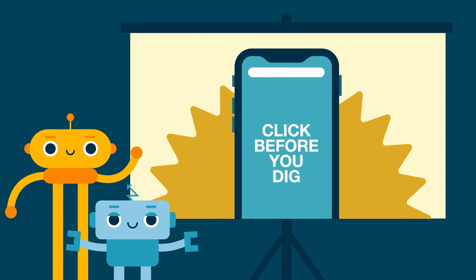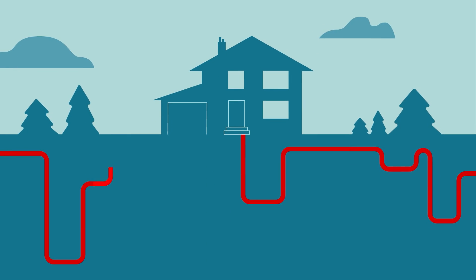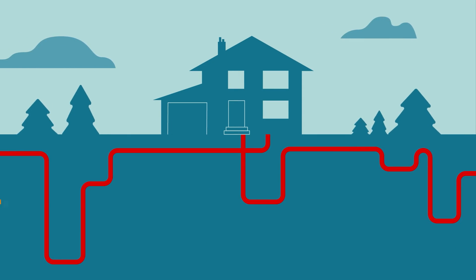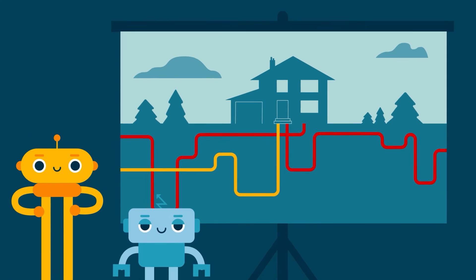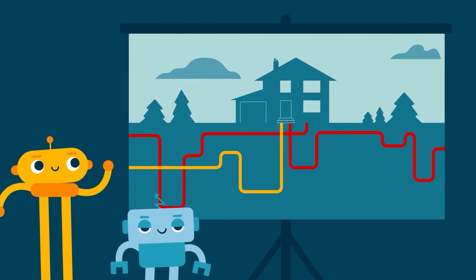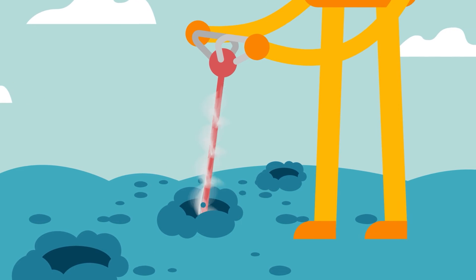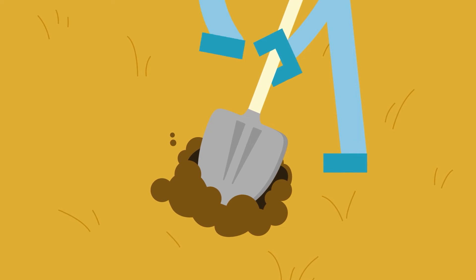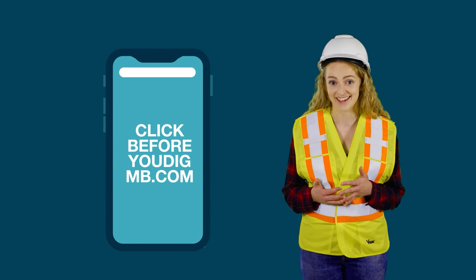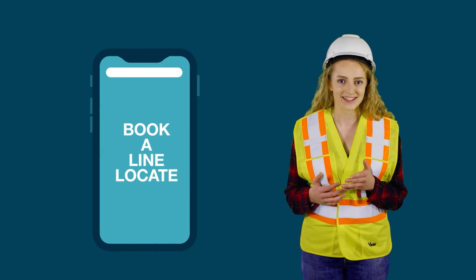Click before you dig. Manitoba Hydro may have power coming to your house through underground cables, and natural gas pipes can run through your yard as well. Before anyone in your home digs a hole for a fence, a sprinkler system, to plant a tree, or anything — tell a parent to search 'click before you dig' and book a line locate. Manitoba Hydro will send someone to check for buried power or natural gas lines. Hitting an underground line can cause electrocution or an explosion.